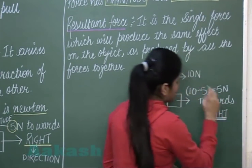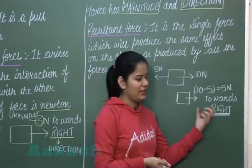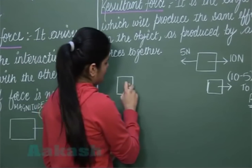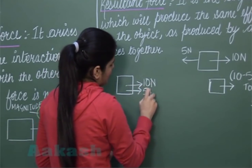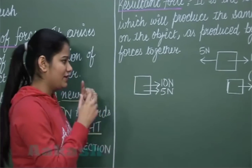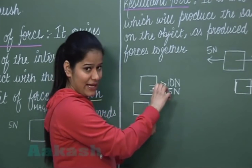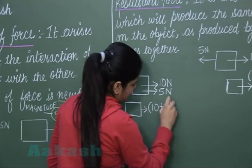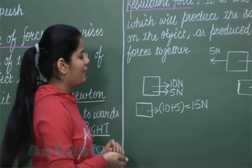So the net force acting on this block is 5 Newton towards the right. Similarly, if this is a block with two forces — 10 Newton and 5 Newton — both acting towards the right, the resultant force will be the sum of these two forces since they are acting in the same direction.